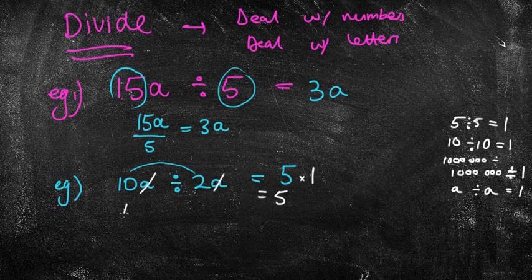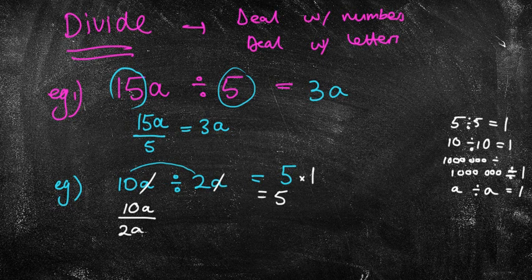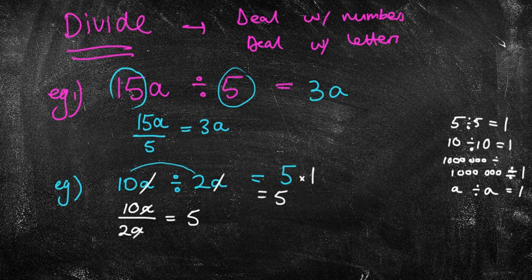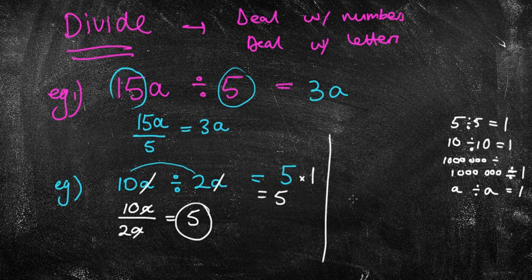Now you might have it written this way. 10a over 2a. And again I do 10 divided by 2 is 5. And because I've got a over a, they cancel each other out. We've just got the answer of 5. If you had a slightly bigger one, for example, and you can still write this one down.